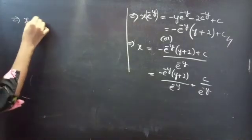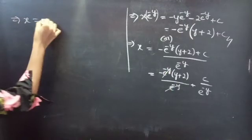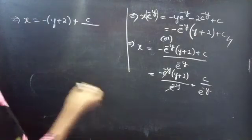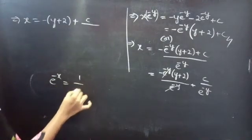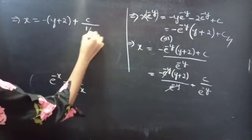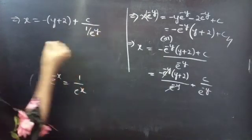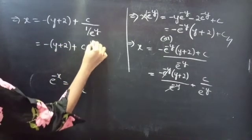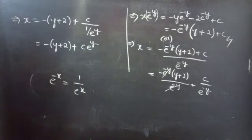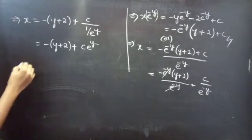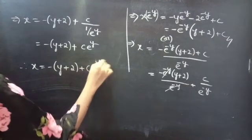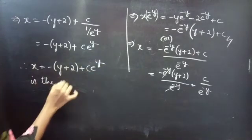Then x = −(y + 2) + C · e^y, since e^(−y)/e^(−y) cancels and 1/e^(−y) = e^y. Therefore, x = −(y + 2) + C · e^y is the required solution.